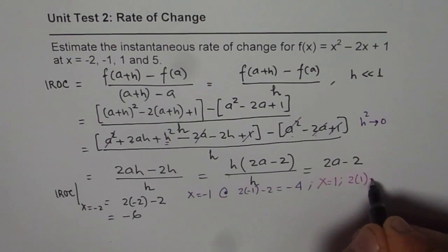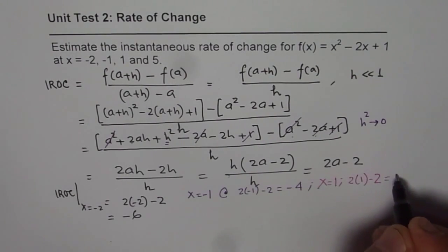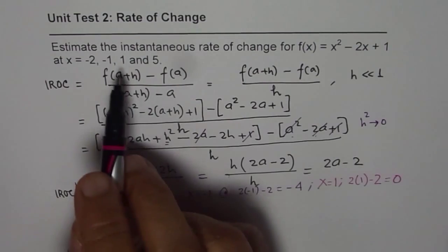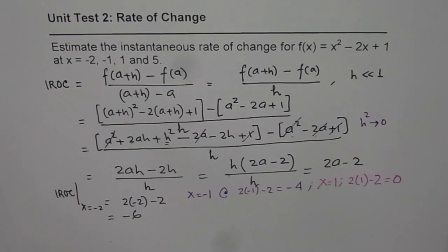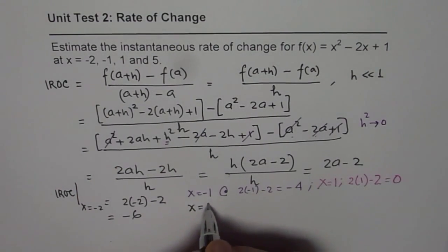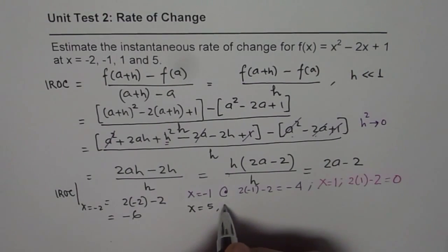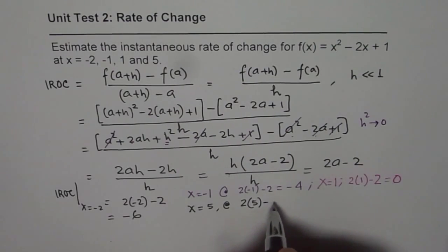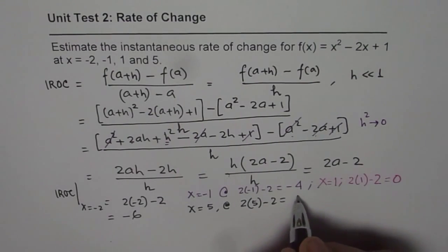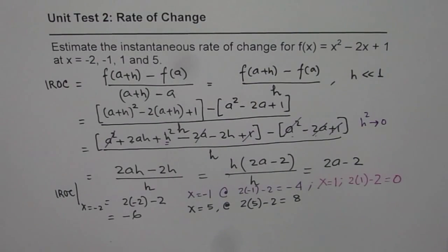At x equals 5, instantaneous rate of change is going to be 2 times 5 minus 2, which is 8. That is how you can find instantaneous rate of change at many different points. Once you get your general formula it saves a lot of time. I'll recommend whenever you have more than one point, use this method.